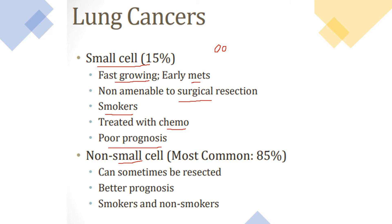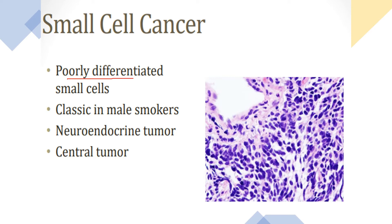Small cell carcinoma has a very poor prognosis, unlike non-small cell carcinoma which has a better prognosis and can sometimes be treated surgically. Small cell carcinoma is a poorly differentiated neuroendocrine tumor and produces different types of hormones. It is found mainly in male smokers and is located in the central part of the lung. Histopathologically, it shows dark small round blue cells.